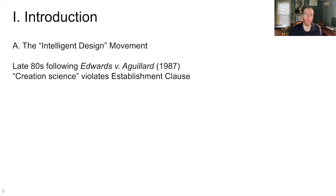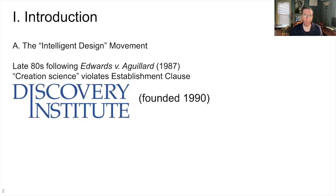The intelligent design movement started in the late 80s following the Edwards v. Aguilard Supreme Court decision that found that creation science or teaching creation science in public schools violates the Establishment Clause in the First Amendment. Following that decision in 1987, we had the founding of the Discovery Institute, a conservative think tank, in 1990.